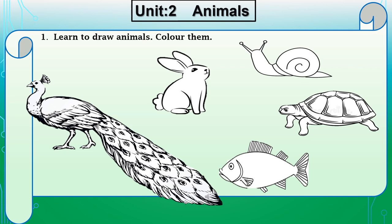Dear students, open up your science book page 13. Here are some activities. What you have to do is learn how to draw the animals and color them also. To learn to draw these animals, just pick a pencil and trace the animals' outline drawn on your page 13.